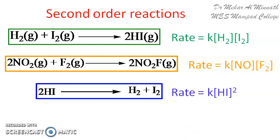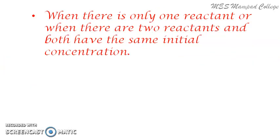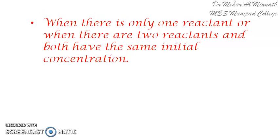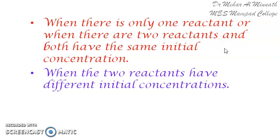Now let us move on to deriving the integrated rate equation for a second order reaction. There are two cases: one is when there is only one reactant, or when two reactants have the same initial concentration — already covered in an earlier video. The second case, which we discuss here, is when the two reactants have different initial concentrations.